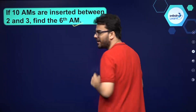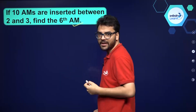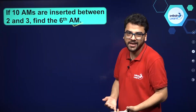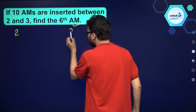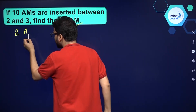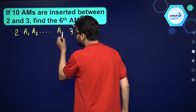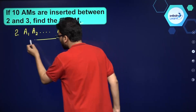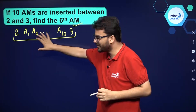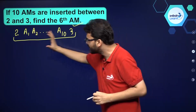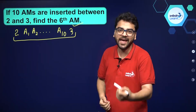AM means the arithmetic mean. So basically you have 2 and 3, and you are inserting 10 such numbers in between them — suppose A1, A2 and up till A10 — such that this sequence becomes an arithmetic progression. So that is the meaning of inserting arithmetic means.